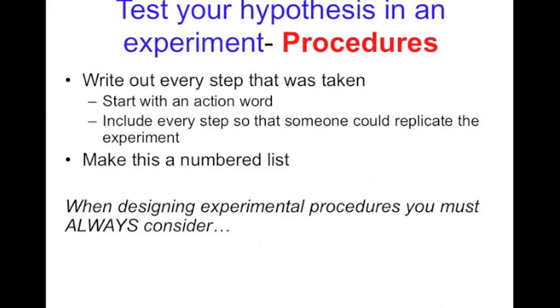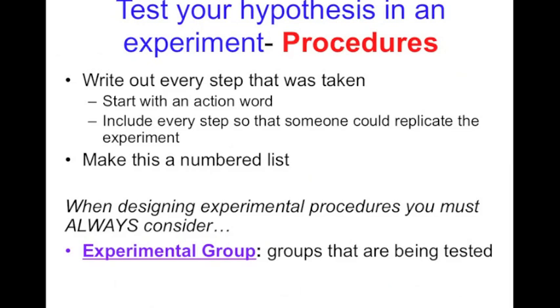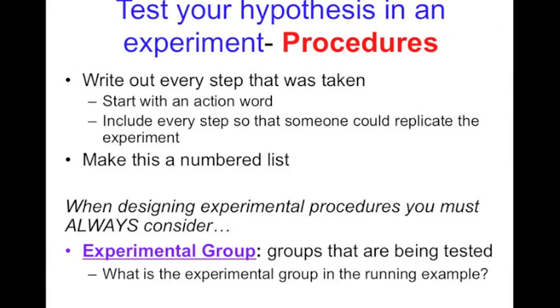When you're going to design the experimental procedures, there's some things you always need to consider. First being that experimental group or experimental groups, because you can have more than one. These are the groups that are being tested or messed with. Thinking back to our running experiment, the experimental group would be all of the people that are drinking some sort of fun drink, a non-traditional drink, maybe like a Gatorade or a Red Bull or orange juice or milk or something like that before the race, something you wouldn't typically drink before you ran.